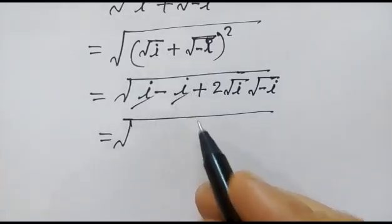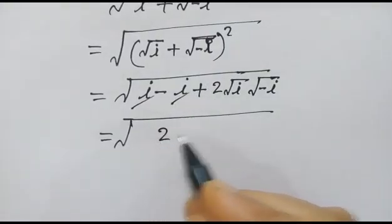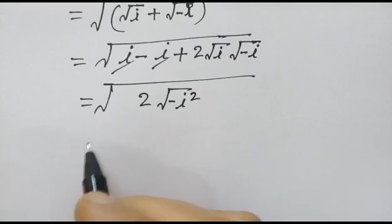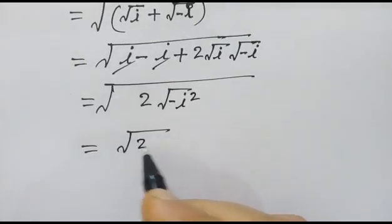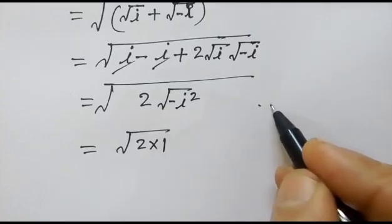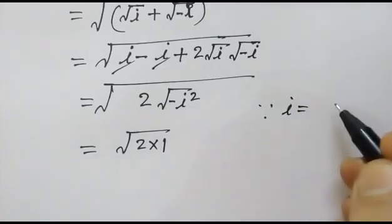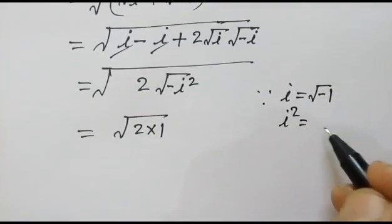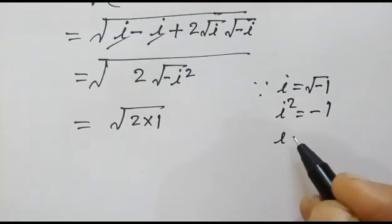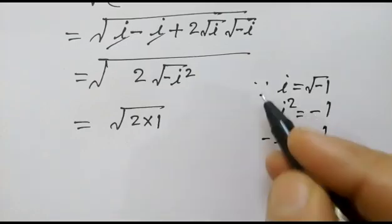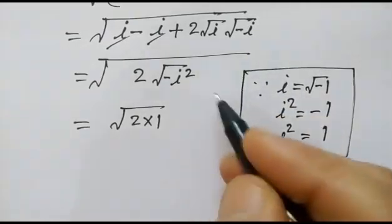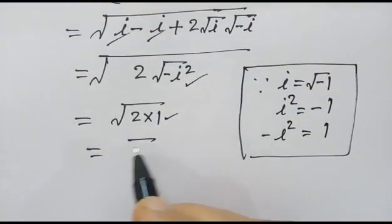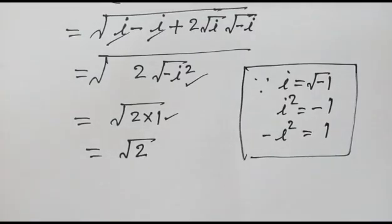i plus i, the minus i cancels out, now we have two minus iota square. This will be equal to two into one, because iota squared equals minus one, and minus iota squared will equal plus one. So this value will be equal to square root of two. Okay friends, thank you.